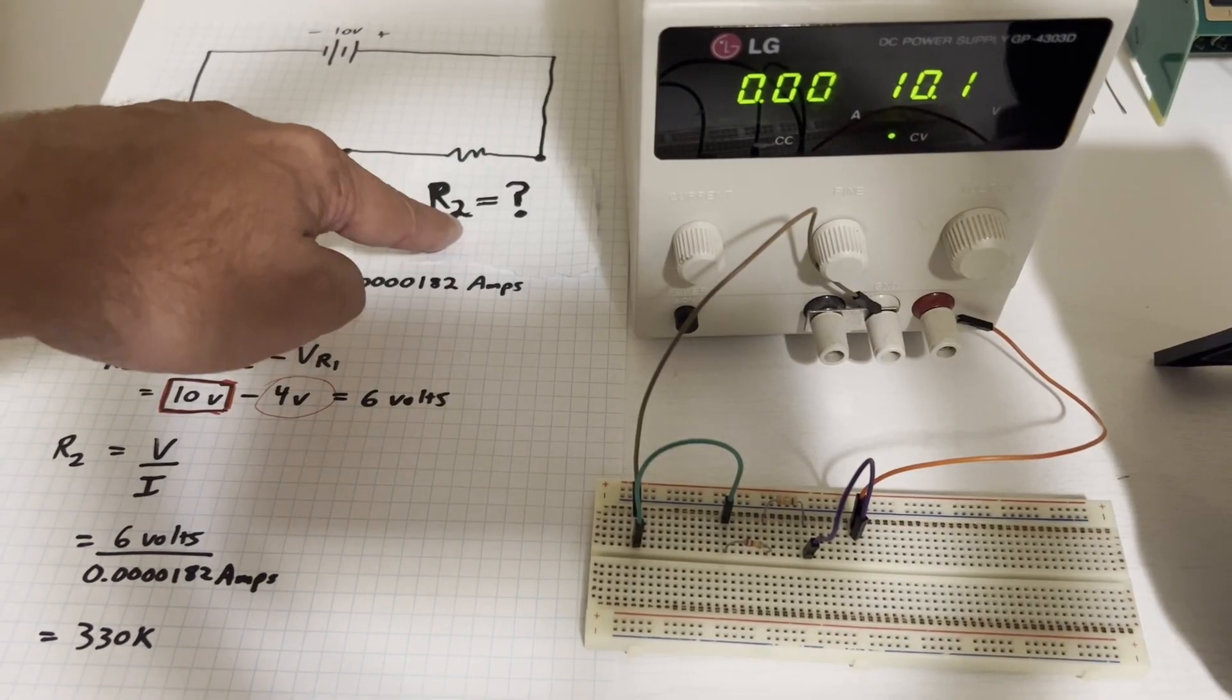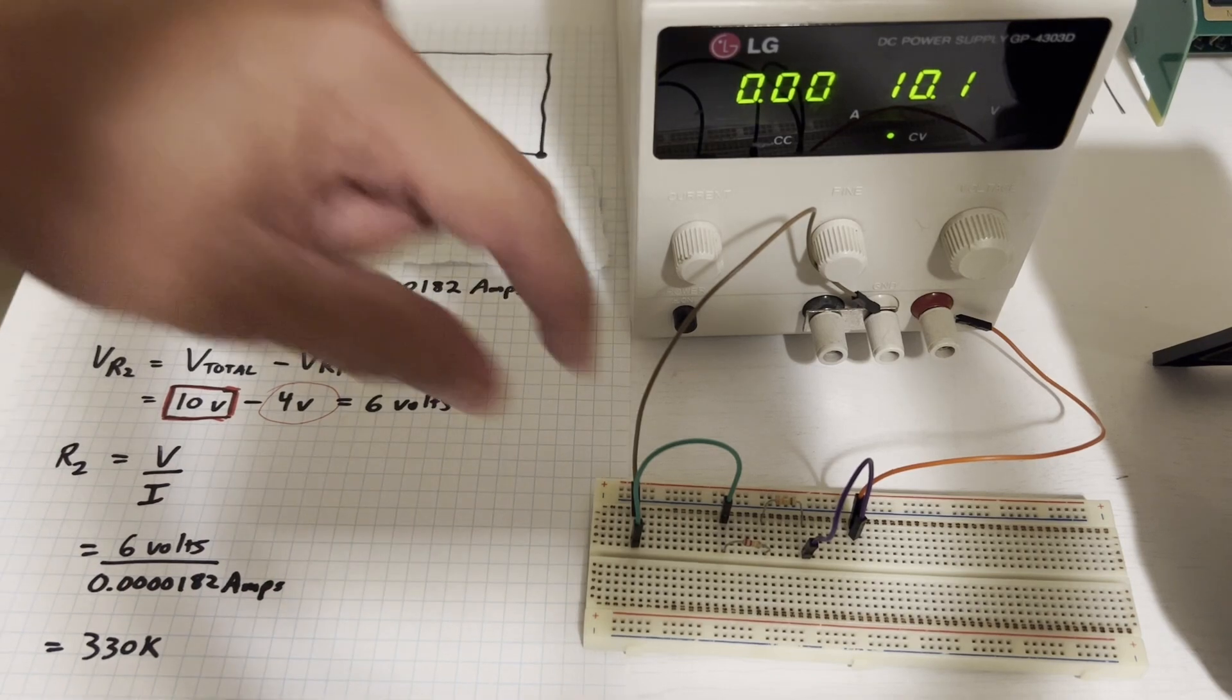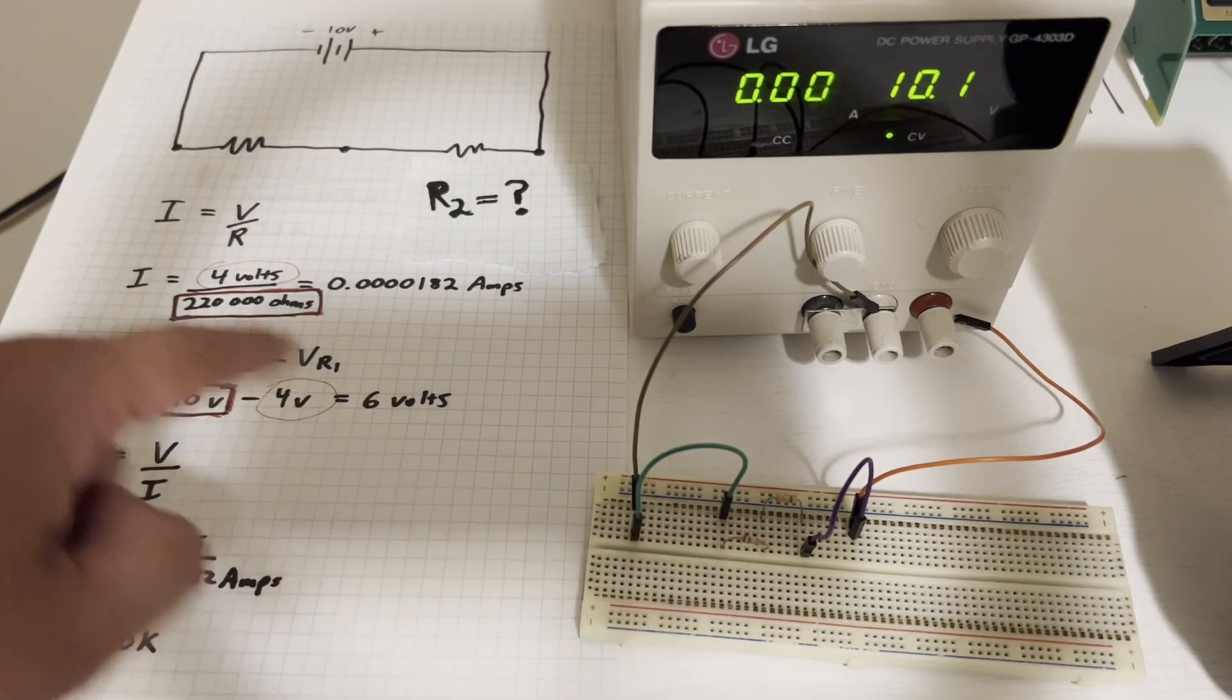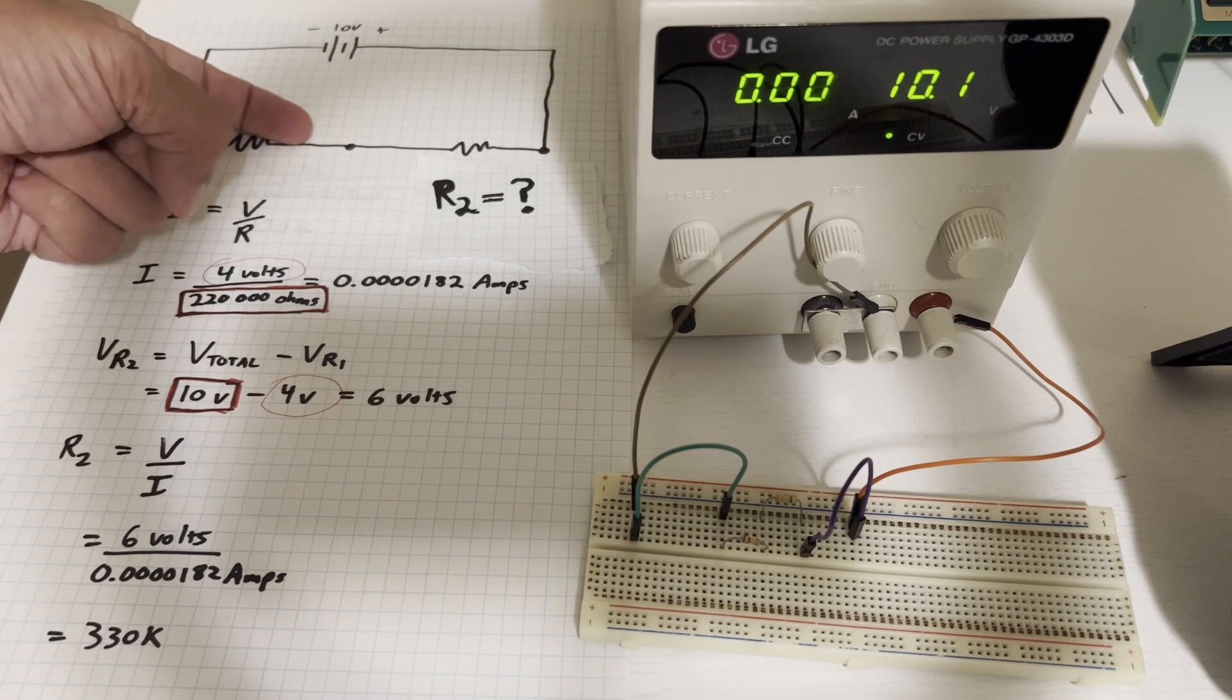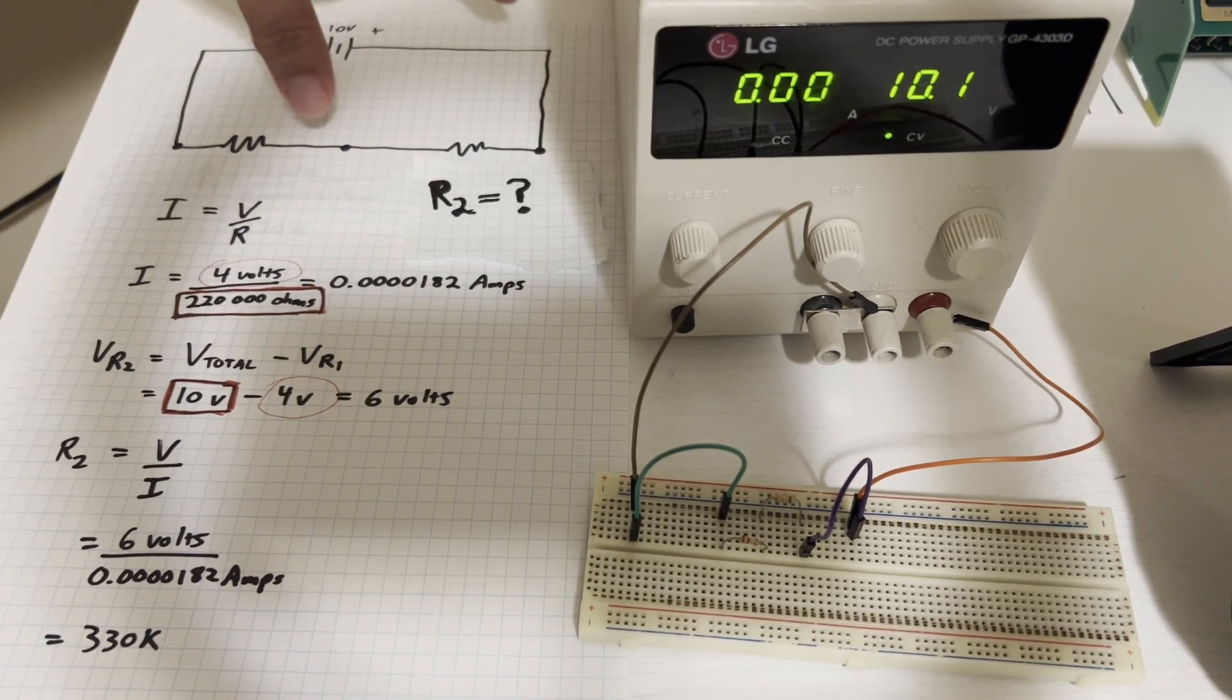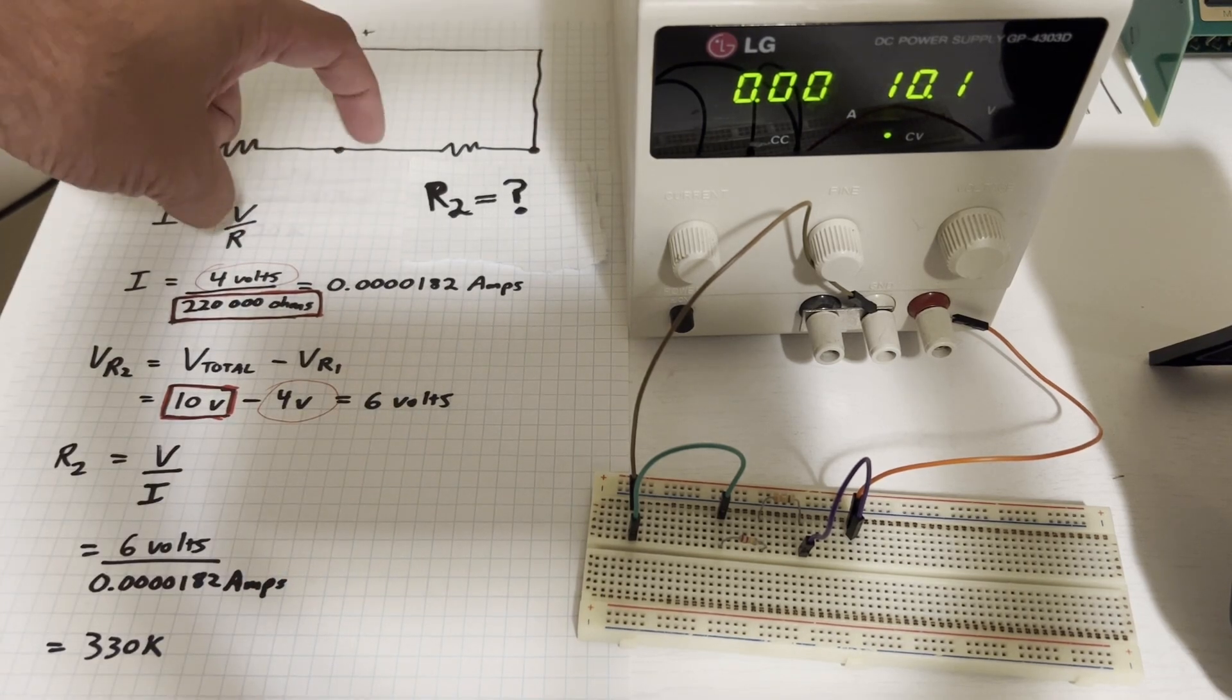So now let's go ahead and try to find R2 a different way. Okay, so we know that current is voltage divided by resistance. And we're looking at the voltage of this first resistor here, which is R1. And so we know that we've measured that at four volts. And this resistor should be 220k ohms. So that gives us 18.2 microamps flowing through resistor one, which also is going to flow through resistor two. We know the voltage across resistor two here is the voltage total minus the voltage of our resistor one. So 10 volts minus our measured four volts that we measured is six volts.